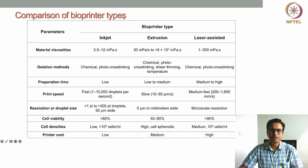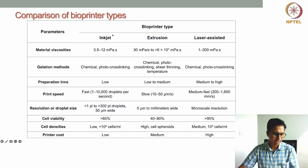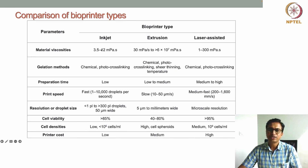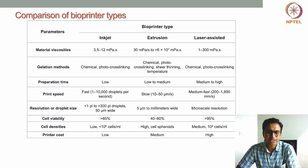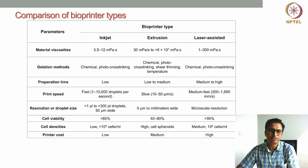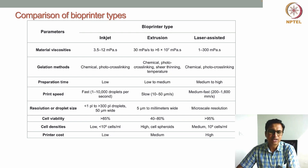If you see this table, I have listed the different properties and parameters of bioprinting technologies, and we will discuss different types of bioprinting technologies like inkjet, extrusion, and laser-assisted that we have already discussed in earlier lectures. Starting with material viscosity — at this stage we know what different viscosities can be used for different types of bioprinters.